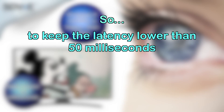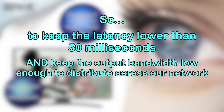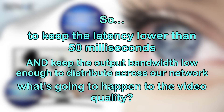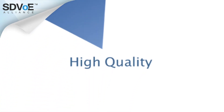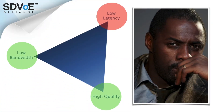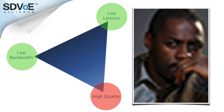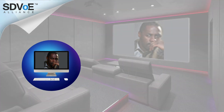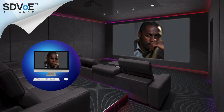To keep the latency lower than 50 milliseconds and keep the output bandwidth low enough to distribute across the network, what's going to happen to the video quality? It's clear to see how the quality of the image is affected when a codec compresses the bandwidth too much. Here you can see blurring as a result of compression, and the larger the display, the more problematic this compression becomes. Everything is magnified, so what looks okay on a codec engineer's 24-inch desktop monitor may not be acceptable when blown up to a 10-meter wide screen.